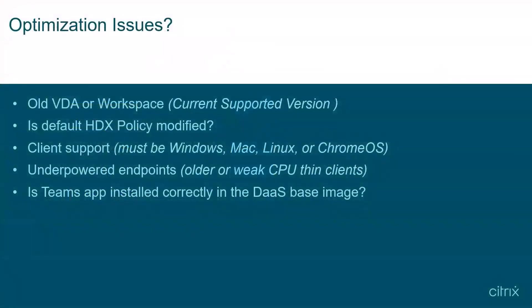So optimizing Teams seems easy enough — so what could possibly go wrong? It could be an old VDA, an old workspace client, or maybe someone tweaked the HDX policy and shut Teams optimization off. Sometimes underpowered thin clients could be an issue, and even installing Teams incorrectly into the base DAS image can affect the end-user experience. You'd think after all this development, all this focus, all the innovation, this issue would be solved. But we continue to hear from Citrix customers and partners that delivering Teams and other unified communication apps in DAS is one of their biggest trouble spots. And for the user, if anything goes wrong, the experience is inconsistent at best.